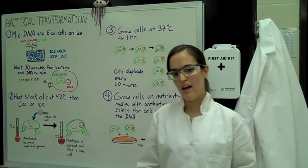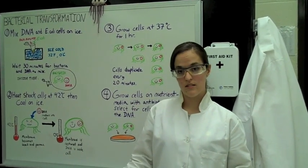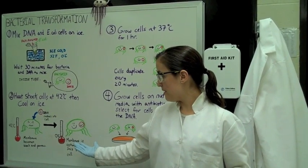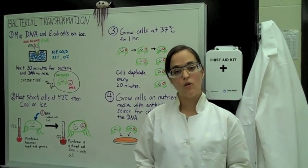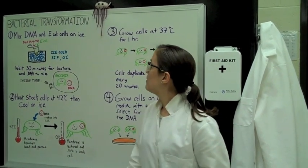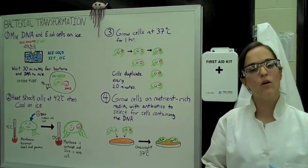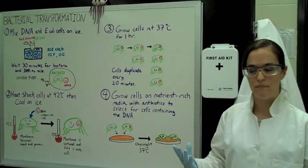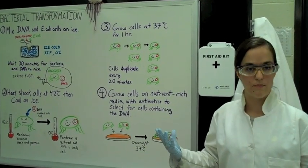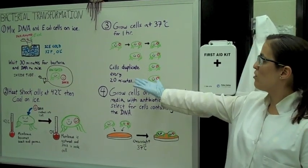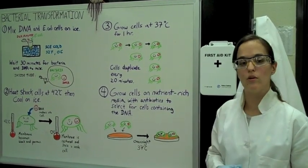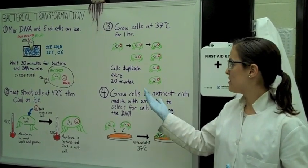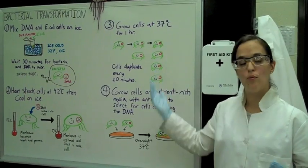Then we chill it at 0 degrees Celsius on ice for a couple minutes, and the membrane of the E. coli is restored and your plasmid is inside. In our next step we want to make more copies of that. We don't want to just have one E. coli with one plasmid in it. We want to have a bunch of E. coli with a plasmid in it. We grow them at 37 degrees C for one hour. They duplicate every 20 minutes. Every 20 minutes one goes to two, two goes to four, four goes to eight and so forth.